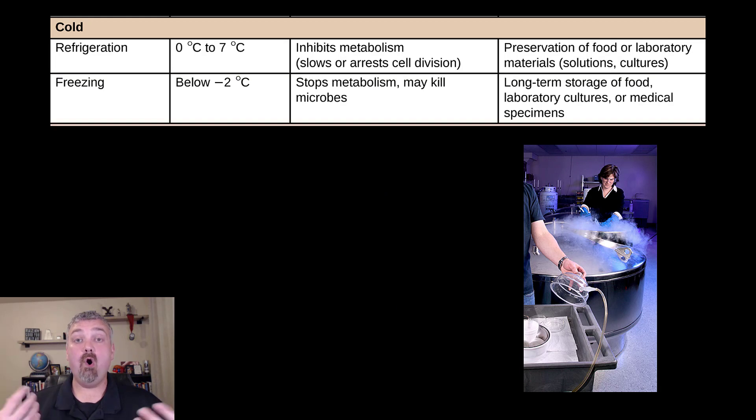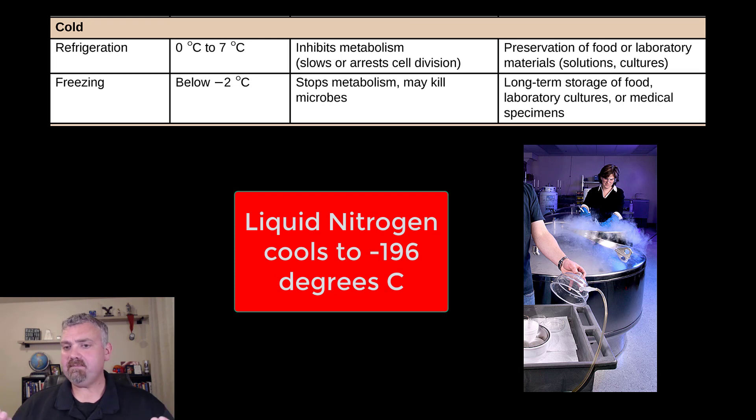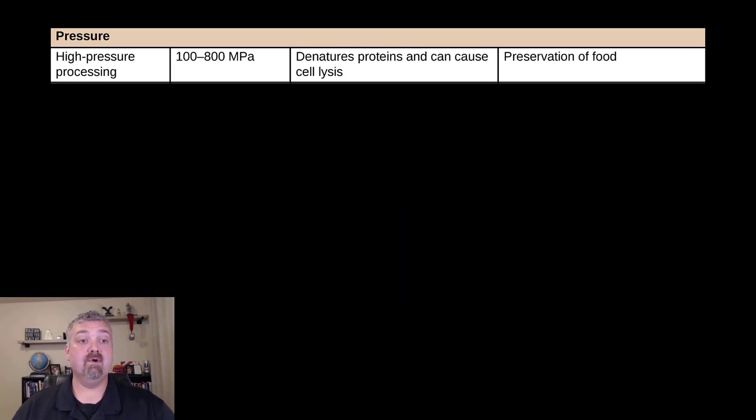So you can even have ultra low temperature freezing though. There are freezers full of dry ice that can maintain things at negative 70 degrees. Or here I have a picture of using liquid nitrogen. These tanks are going to maintain a temperature of minus 196 degrees Celsius there. So that's how we use cold to control microbes.